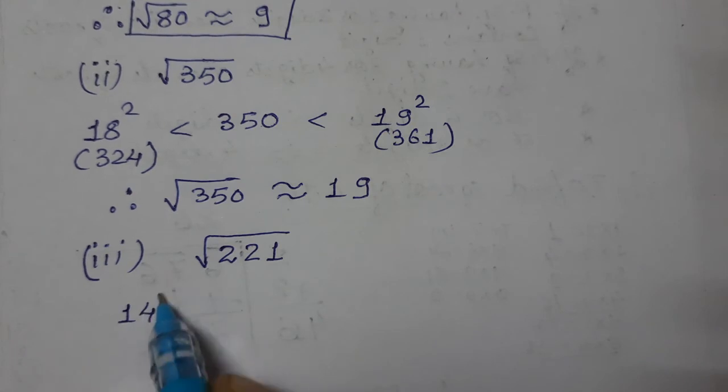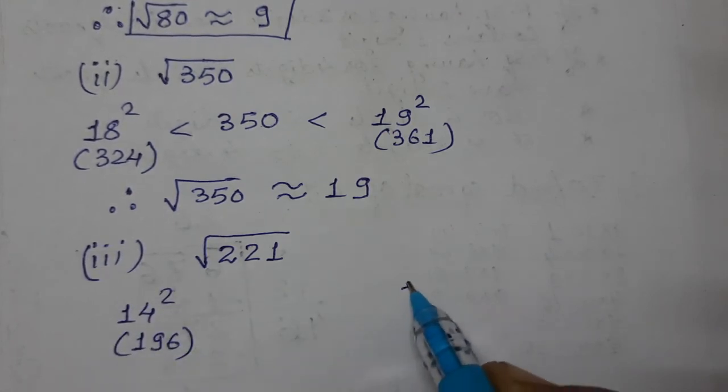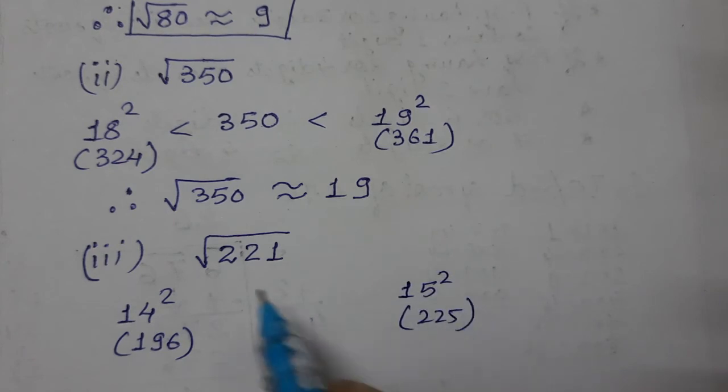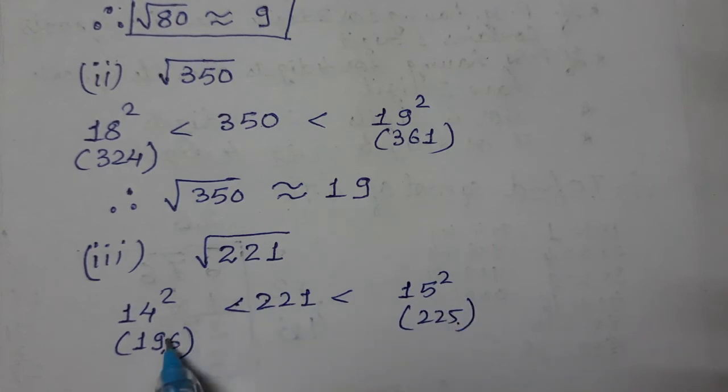221 ka square root we need to find. So again work it out. 14 squared is 196, and 15 squared we know is 225. So 221 lies between 196 and 225.